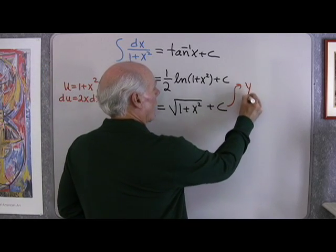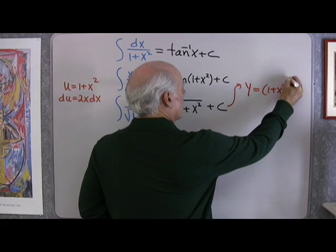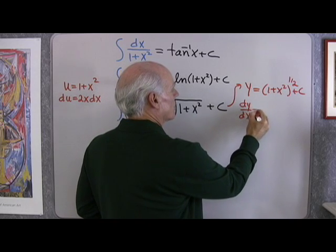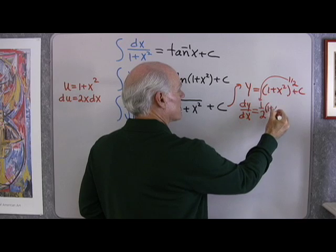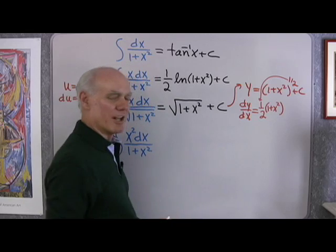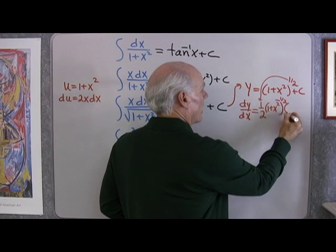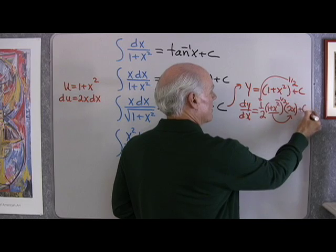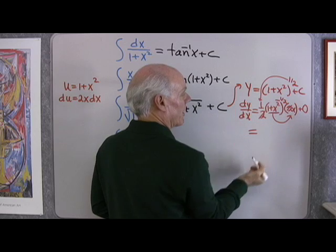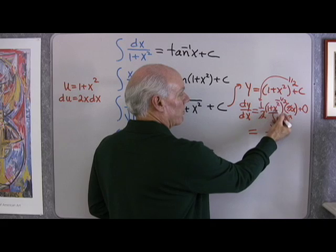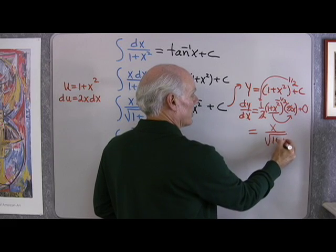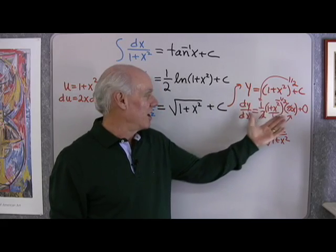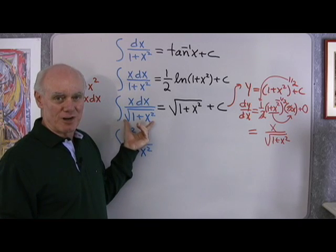So if I say y is equal to 1 plus x squared to the 1 half plus c, and I differentiate it, the derivative of y with respect to x is going to be 1 half times the base, 1 plus x squared, times an exponent that's 1 less than that, 1 half minus 1, which is negative 1 half, times, remember with the chain rule, I have to differentiate that base, so I get 2x plus the derivative of c, which is 0. The 2's divide out right there. I have an x in the numerator over 1 plus x squared to the negative 1 half is 1 over square root of 1 plus x squared. And sure enough, that's the thing that I started with, so that is the anti-derivative. You could always take the answer that you get, differentiate it, and see if you get what you started with.